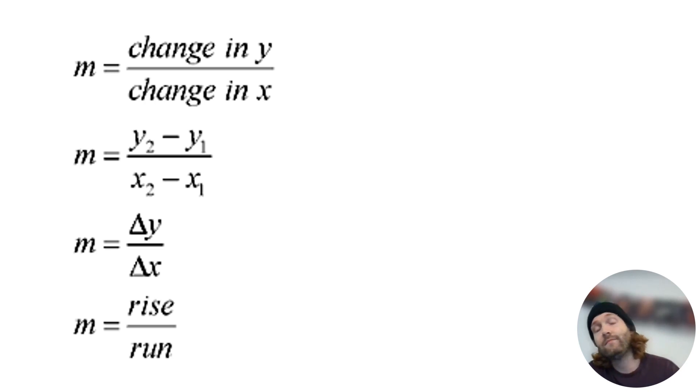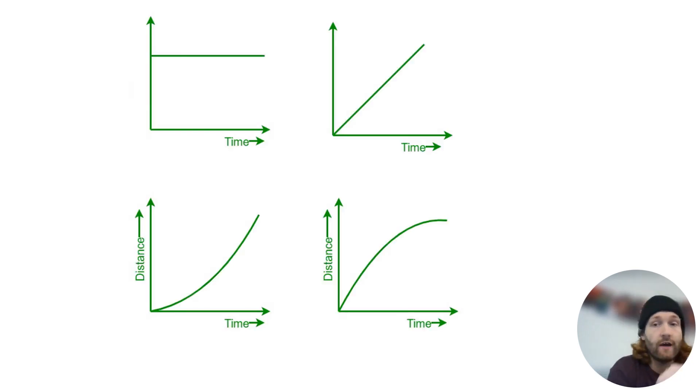So what can we do now? We can revisit those same graph shapes but interpret them as if it was a speed-time axis. So I brought over those same ones. Let's call this speed, speed, speed. And let's interpret these graphs. A horizontal line on a speed-time graph means the object's maintaining a constant speed.